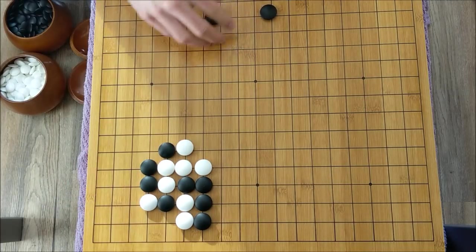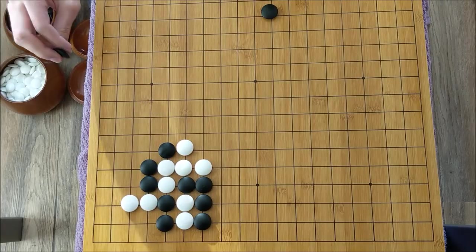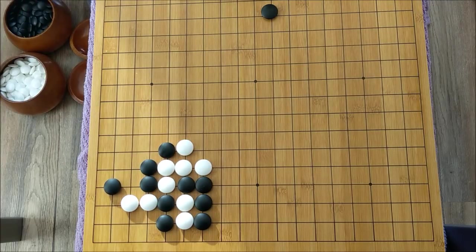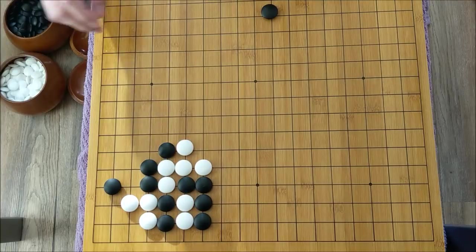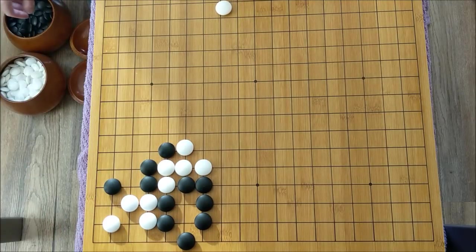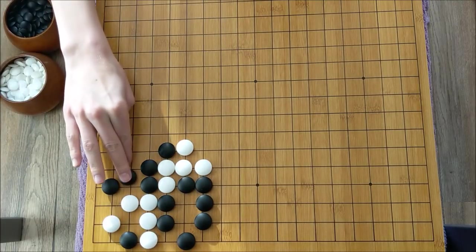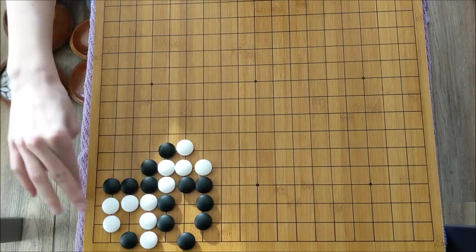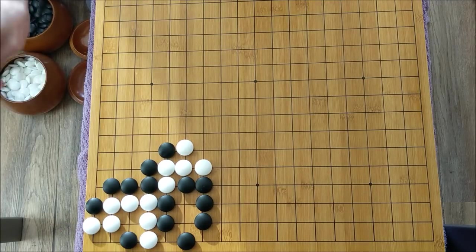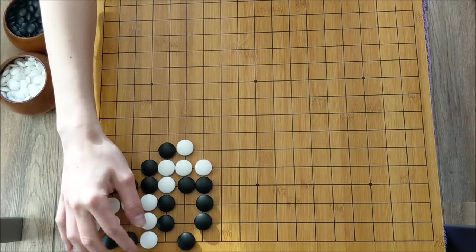If white tries to atari, this is simply an atari. And it's going to be very difficult for white to try to make eyes in this corner. In fact, it's going to be almost impossible. White can try to get something going. However, after black throws in and white has to defend, all black has to do is play a move like this. And white is completely dead. So we can see there's really no way for white to fight this shape.